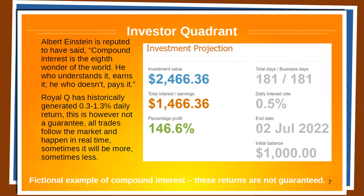Albert Einstein is reputed to have said compound interest is the eighth wonder of the world — he who understands it earns it, he who doesn't pays it. Here's a fictional example: starting with an initial balance of one thousand dollars at a daily interest rate of 0.5%, six months later the total earnings are one thousand four hundred sixty-six dollars — that's 146.6% return. Compare that to a bank giving you one percent per year or an index fund giving you eight percent per year.